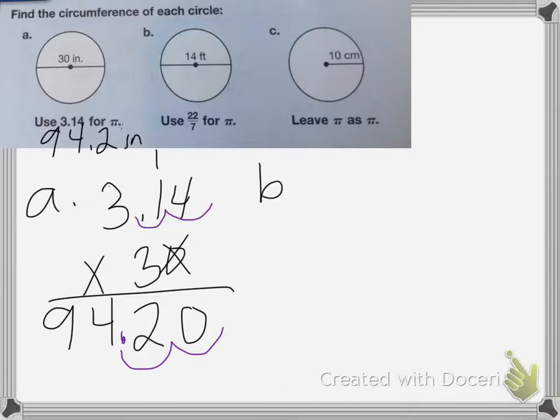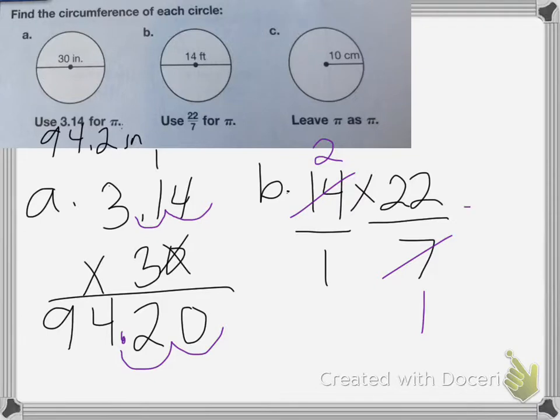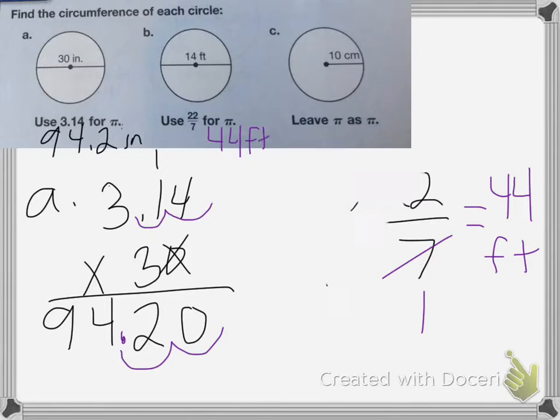Okay, for B, it says use 22 sevenths for pi. 22 sevenths is very close to 3.14, so we can go ahead and use that. So this time, I'm going to have 14 times 22 sevenths. So I'm going to do 14 over 1 times 22 sevenths. I can cancel first. 7 becomes a 1, 14 becomes a 2. 2 times 22 is equal to 44. And my answer is going to be 44 feet. Remember, it's always easier to cancel first, and then multiply across.